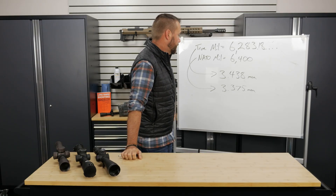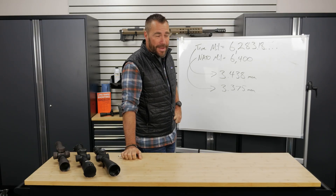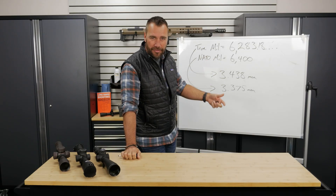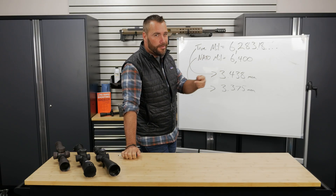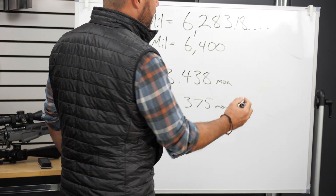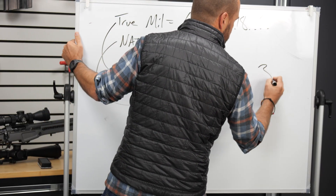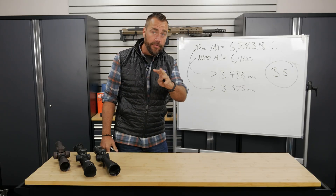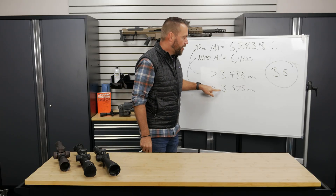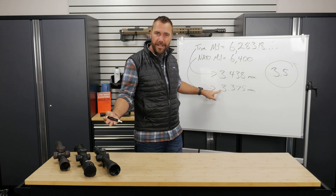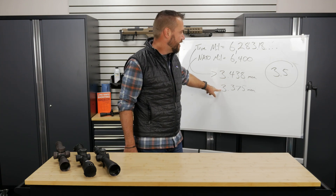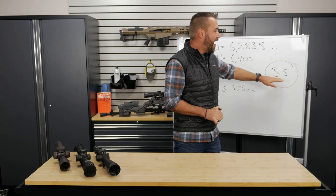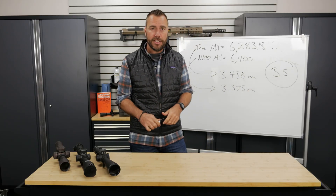So which one do you use? I say use neither, because some of these conversions we're doing on the fly are for wind calls anyway, which are really just educated guesses. My favorite thing to do is just use 3.5 as an easier round number I can use in my head. However, if you want to be precise, I would go for the NATO mill — you can use 3.375. But I use 3.5 because it's so much faster in my head.